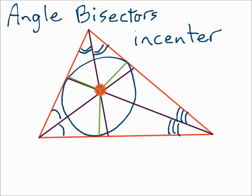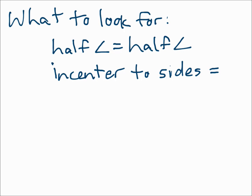What to look for with the angle bisectors? Since they cut an angle in half, you might say that one half-angle measure equals the other half-angle measure. Also, since the incenter is equidistant from the sides of the triangle, you might have those distances equal each other. Make sure you keep track of all of the properties of the perpendicular bisectors and the angle bisectors, and make your equation fit the situation that's going on.